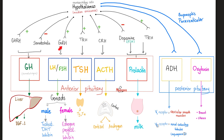Hypothalamus secretes GnRH, which goes to the anterior pituitary to secrete LH and FSH, which go to the gonads. In females, they go to the ovaries to secrete estrogen, progesterone, and inhibin. In males, they go to the testicles to secrete testosterone, dihydrotestosterone, and inhibin.